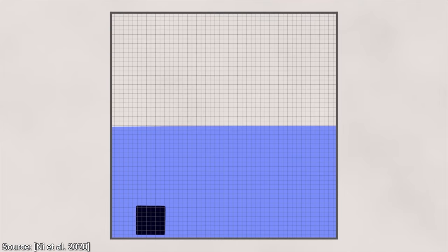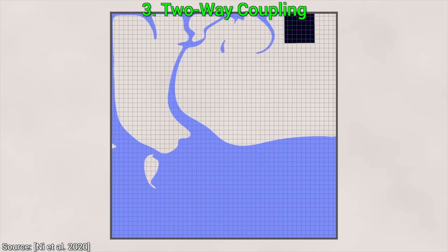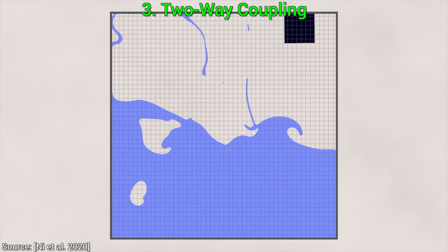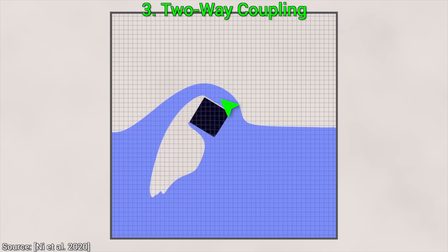And experiment number three, two-way coupling. We noted this coupling thing earlier, so what does that mean? What coupling means is that here, the water can have an effect on the magnet, and the two-way part means that in return, the magnet can also have an effect on the water as well.